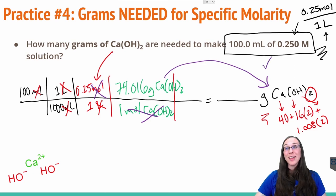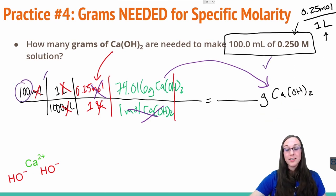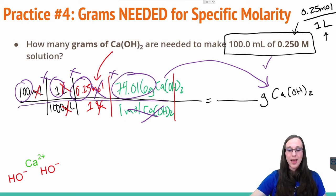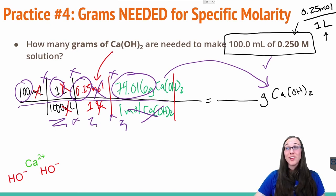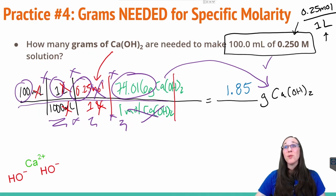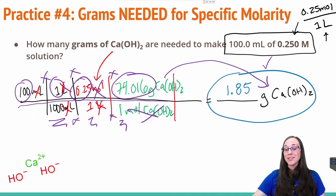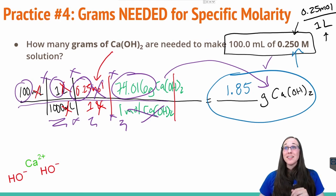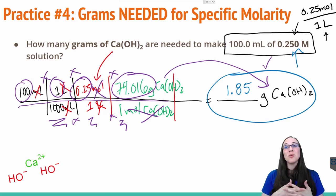We can plug and chug into our calculator: 100 × 1 × 0.25 × 74.016, all divided by 1000. You should get a value of 1.85 grams of calcium hydroxide. So if I took 100 milliliters in a beaker, weighed out 1.85 grams of calcium hydroxide, and mixed those two together, we would have a 0.25 molar solution of calcium hydroxide. This kind of calculation is most applicable to anyone taking a lab course where you have to make your own solution.